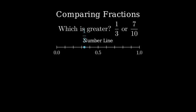One-third is approximately 0.333, and seven-tenths is 0.7. We can already see that seven-tenths appears to be greater, but let's prove this algebraically.